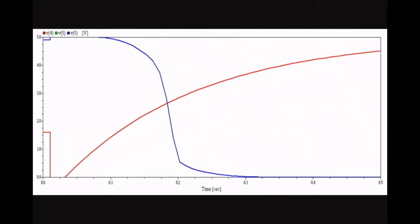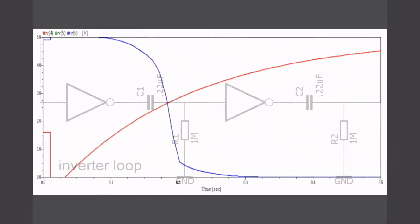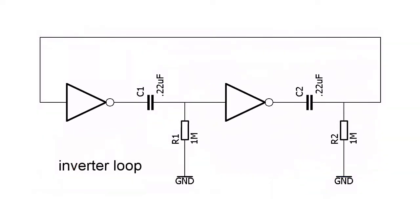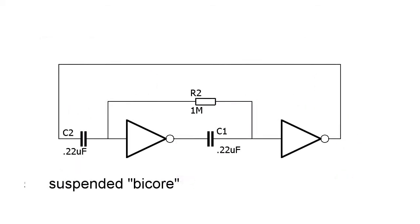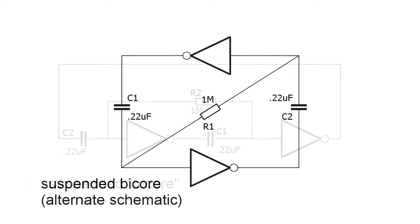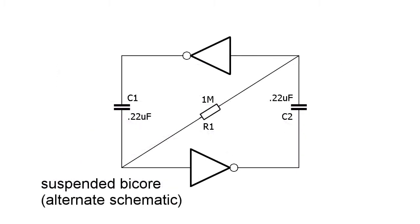What we can do is we can loop the output of the second inverter back to the input of the first inverter and this will basically make an oscillator. In beam technology they call two of these inverters together a bicore and this example here is a suspended bicore. And here's an alternate schematic. It's pretty elegant.